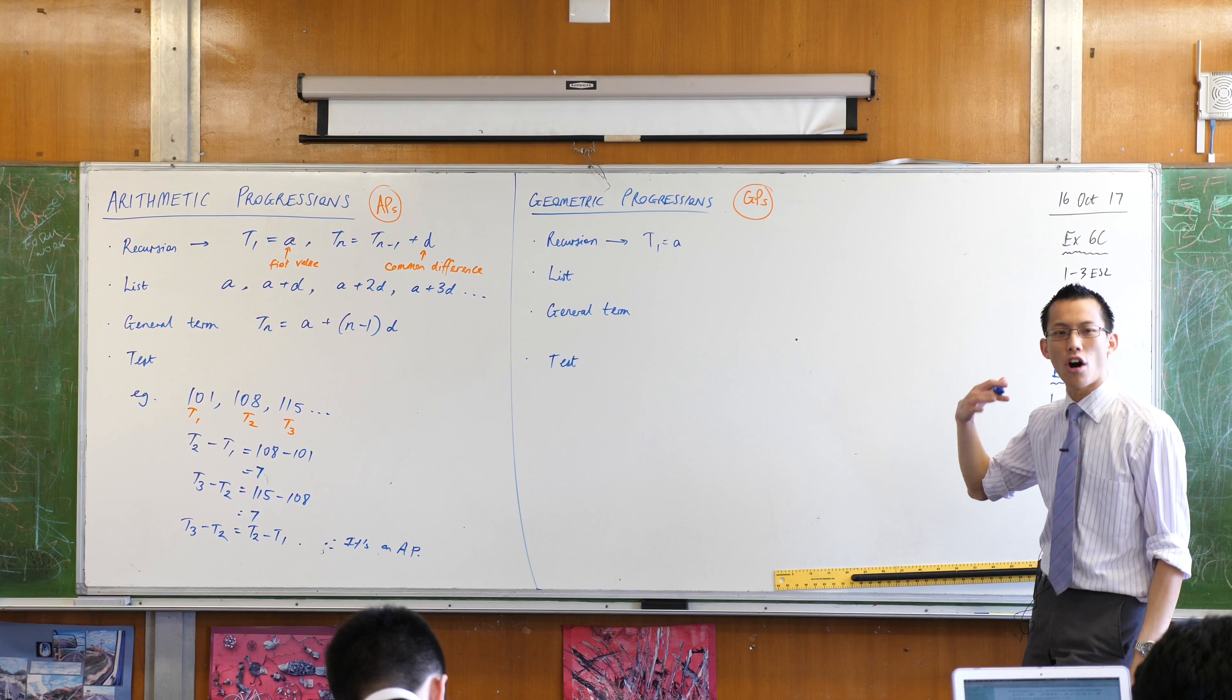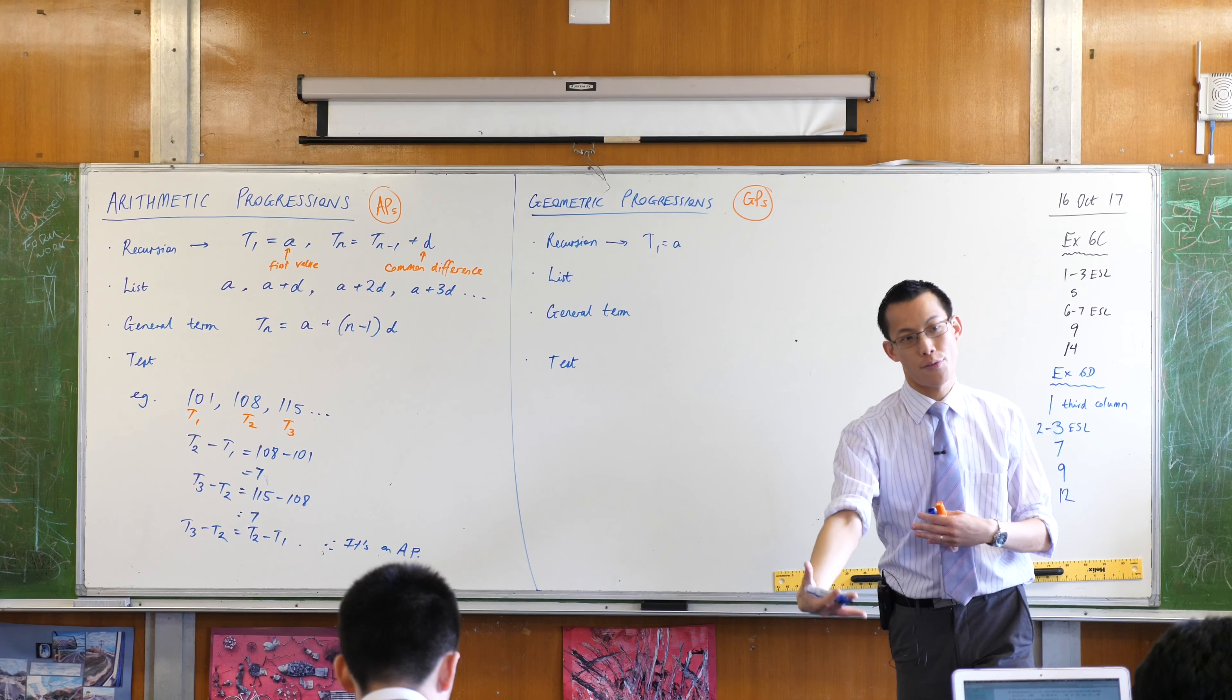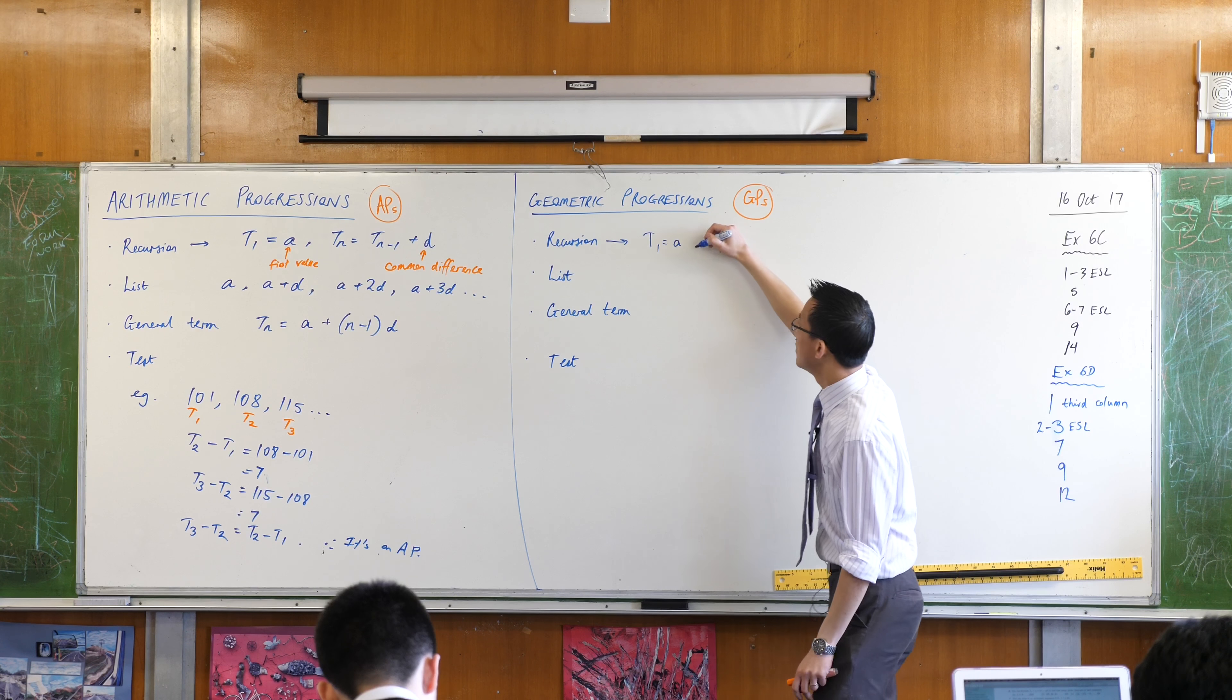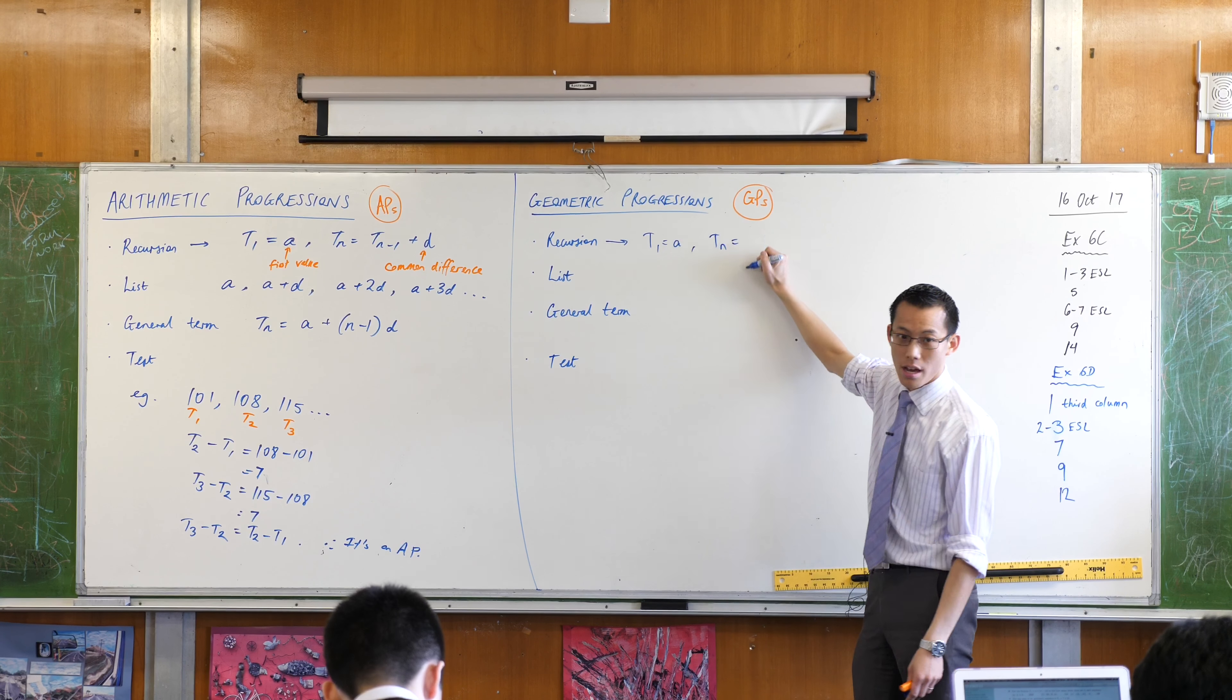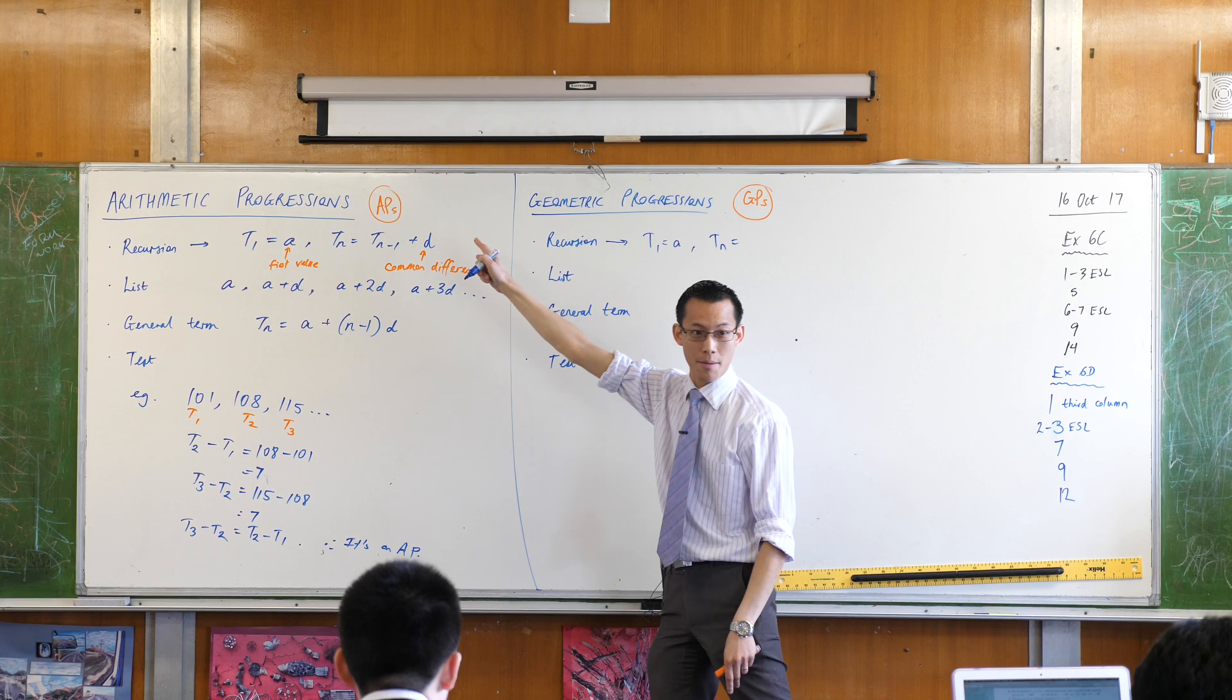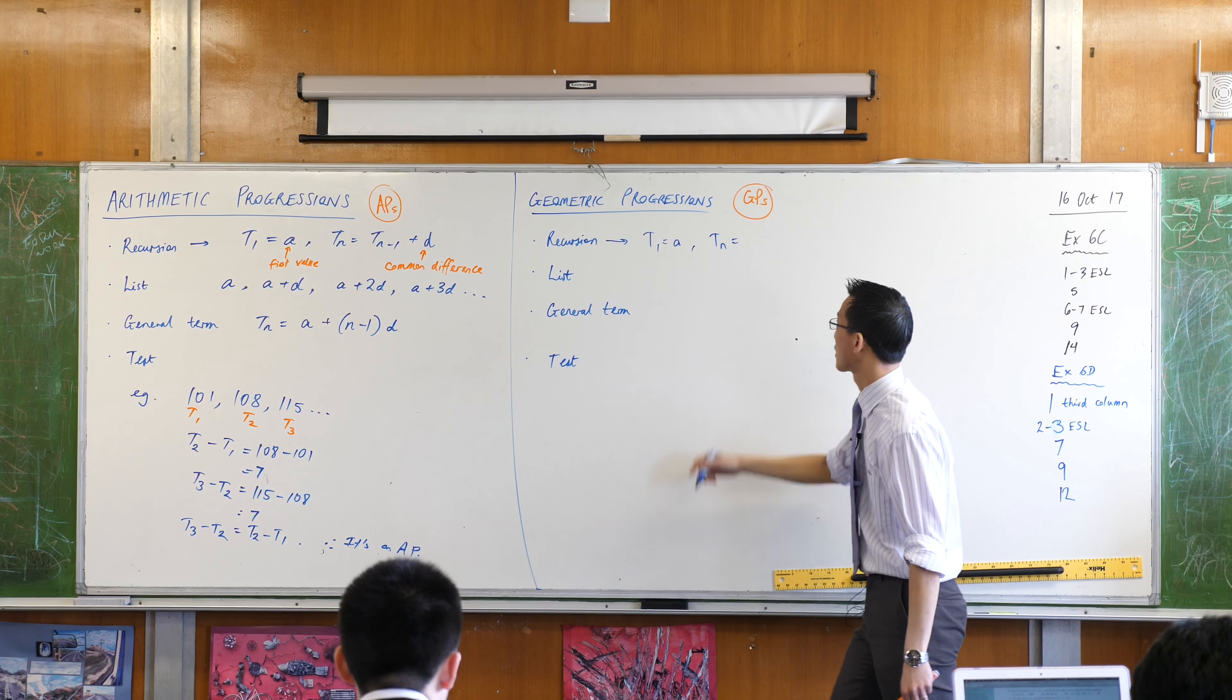Instead of adding the same number over and over again, to get to the next term you multiply the previous term by something. You multiply. So here's your previous term and you multiply.